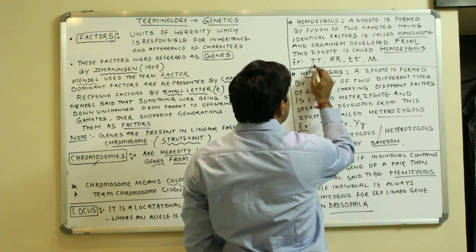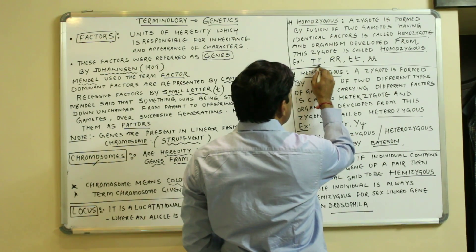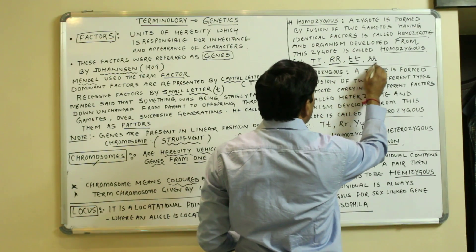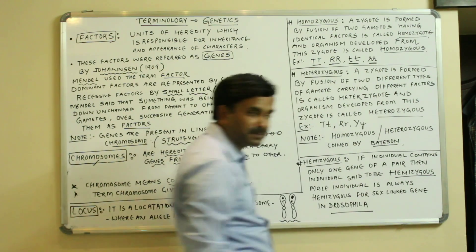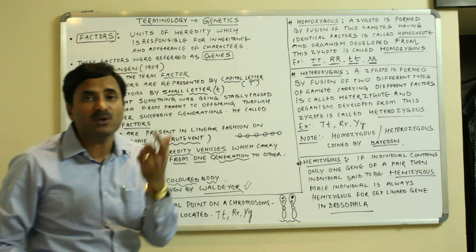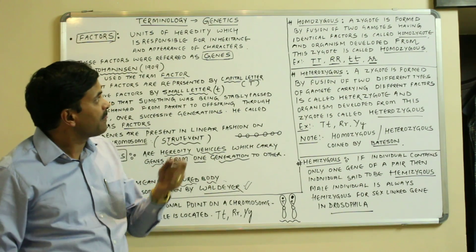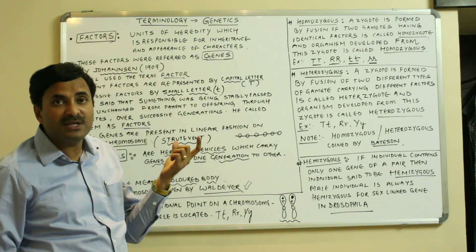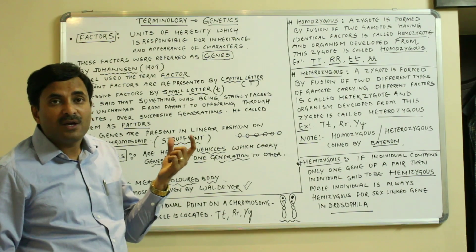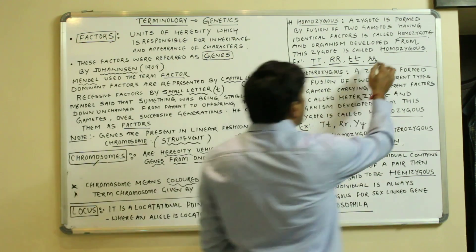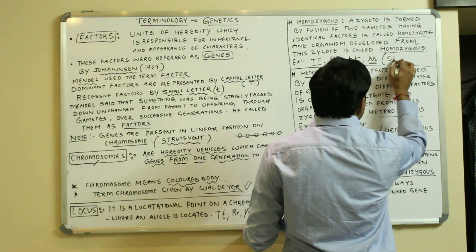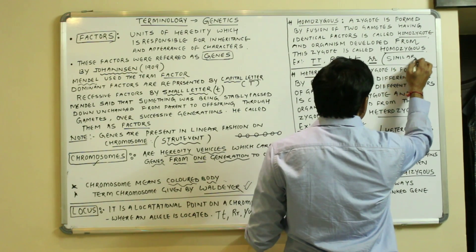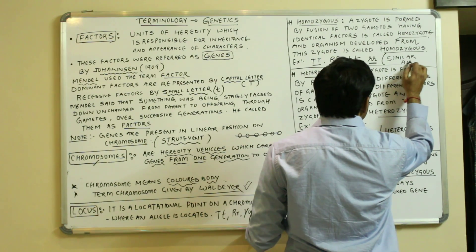Homozygous is represented by capital T capital T, capital R capital R, or small t small t, small r small r. We can also say that a homozygous condition is a condition which consists of similar alleles.